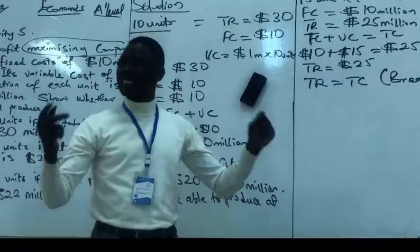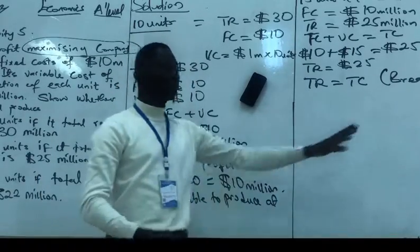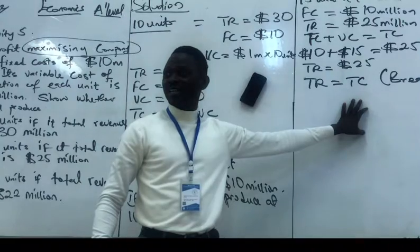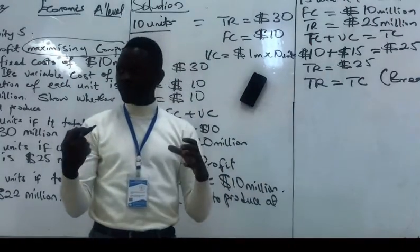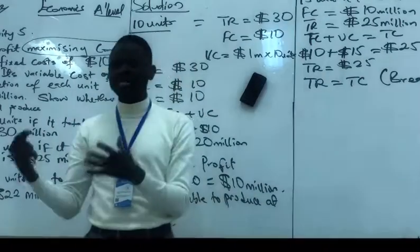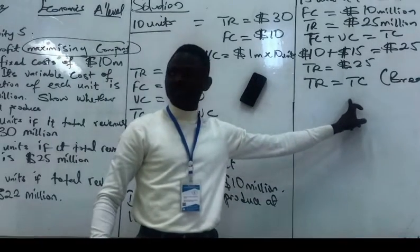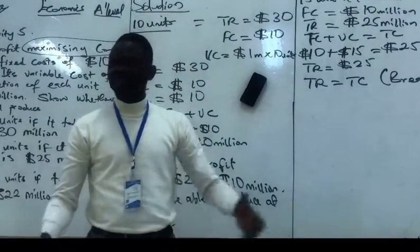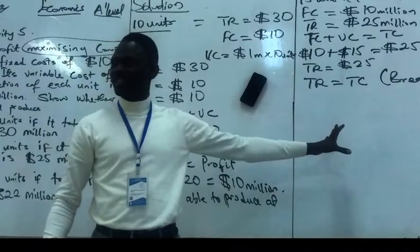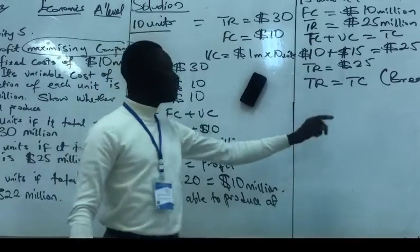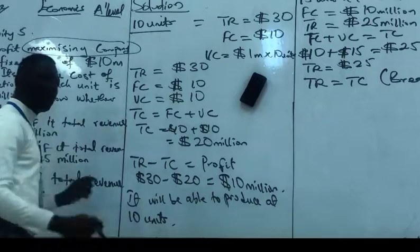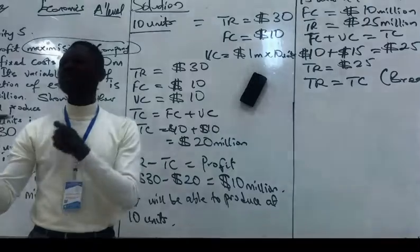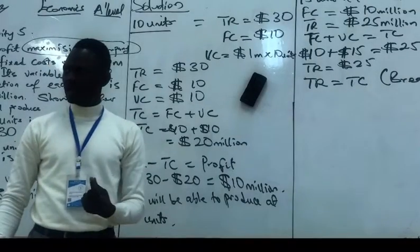So will this firm that is thinking about profit maximization produce at this level? No. Listen, will a firm that thinks about profit maximization produce at this level? No. Because that firm wants to make profit. It does not want to break even. Do you understand? So at 15 units of output, the firm will not produce because it is a profit maximizing company. Is it clear?